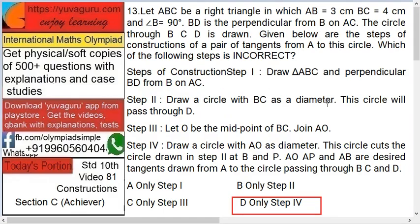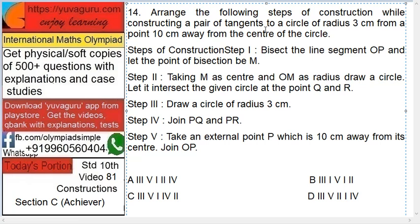See, we have drawn a new circle. Now this circle cuts the original black circle at point B and some point P over here. So now AO, AP, and AB are the desired tangents. Are they? Let's see.